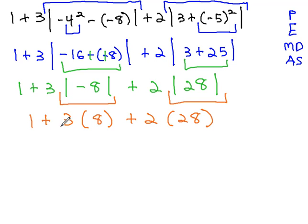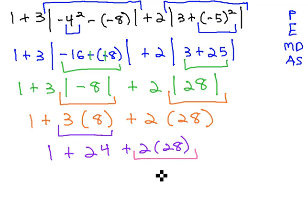Multiplying from left to right, first we'll do the 3 times 8 to get 24, plus 2 times 28. Next, we'll do the 2 times 28, finishing off the multiplication to get 56.